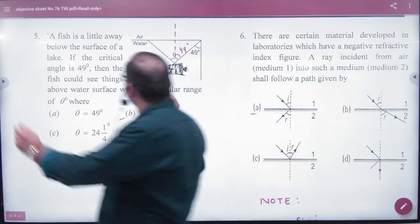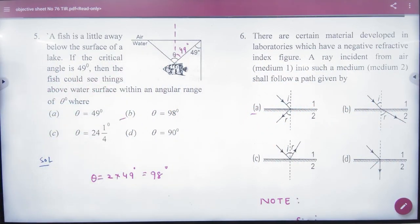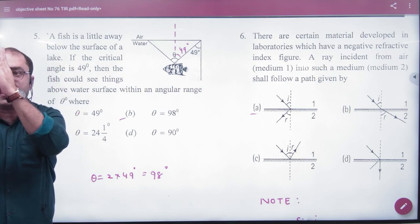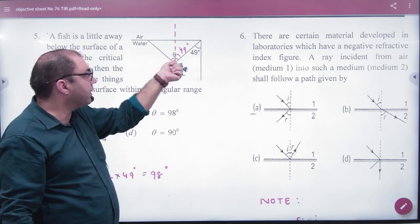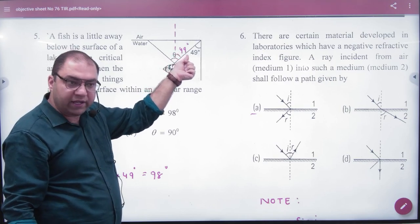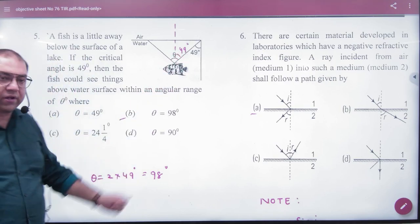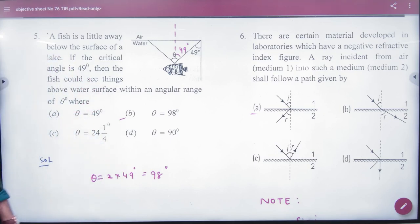Fifth question. There is a fish in water. The critical angle is given in the question, it is 49 degrees. Then the fish could see things above the water surface within an angular range of what? What is the angle on both sides? Theta and theta. So theta is the critical angle. Total angle you want to take out, the critical angle here is 49 degrees, so what will be the double of 49? 98. So what will be the angular range? You can see those things in 98 degrees. After that, you have to go back to light.